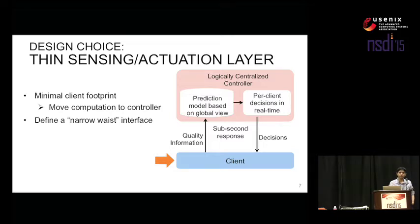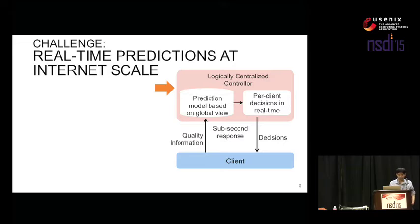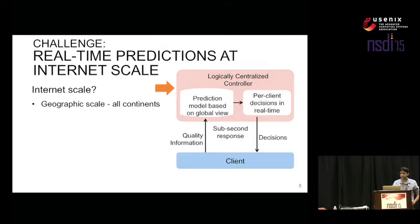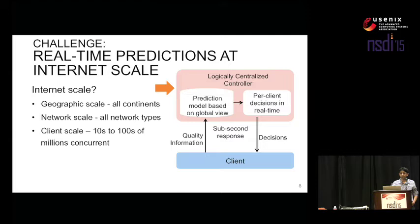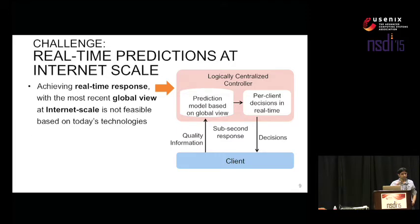The second major challenge is making real-time predictions at internet scale. Internet scale means: first, geographic scale — supporting a true worldwide deployment across every country and continent. Second, network scale — viewers can be on any type of network, cellular, cable, and all different deployments. Third, client scale — as more video traffic comes to the internet, we're talking about tens to hundreds of millions of concurrent clients all streaming at the same time.